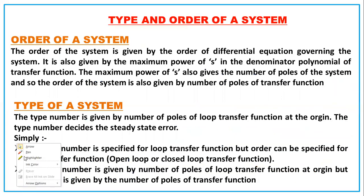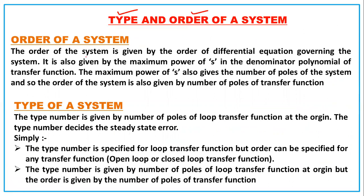Now let's see what is type and order of a system. The order of a system is basically the order of the differential equation. The transfer function is formed from differential equations by taking the Laplace transform. The order of the system is given by the highest power of s in the denominator polynomial of the transfer function. The maximum power of s also gives the number of poles — for example, s raised to 4 in the denominator means order 4 and four poles.